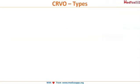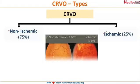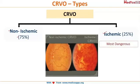There are two types of CRVO. The first is non-ischemic, which is the most common type, accounting for about 75% of cases. The second is ischemic, which is more dangerous and is seen in only about 25% of cases. The non-ischemic type has a milder picture, whereas the typical splashed tomato appearance is seen in the dangerous ischemic subtype of CRVO.